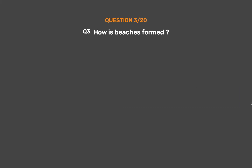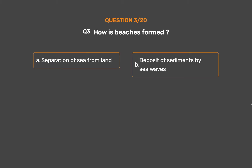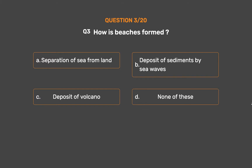Question No. 3: How are beaches formed? Option A: Separation of sea from land. Option B: Deposit of sediments by sea waves. Option C: Deposit of volcano. Option D: None of these.